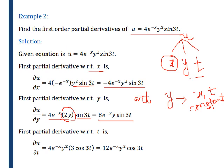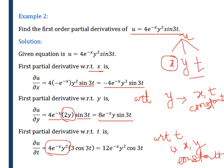Now we find the partial derivative with respect to t. Here we are differentiating with respect to t, so we will keep x and y both constant. The other terms will remain constant, and the differentiation of sin is cos; then we have to differentiate the bracket, so the differentiation of 3t will be 3. So del u by del t will be 12 e raised to minus x, y square, cos 3t.